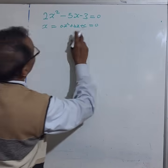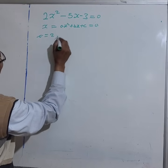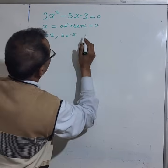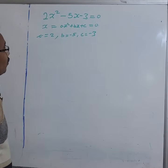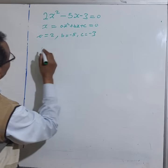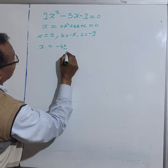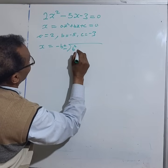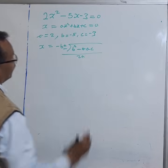So let's identify the coefficients: a is equal to 2, b is negative 5, and c is equal to negative 3. To solve this, let's use the quadratic formula, which is x equals negative b plus or minus the square root of b squared minus 4ac, over 2a.